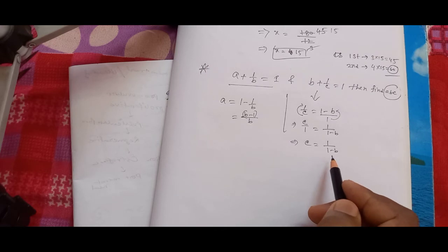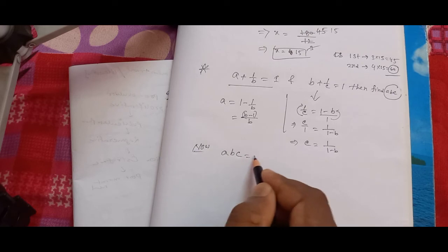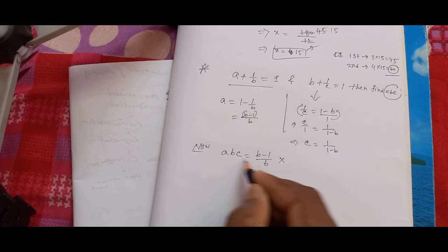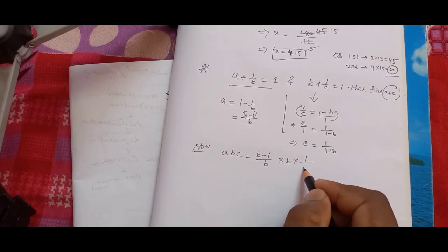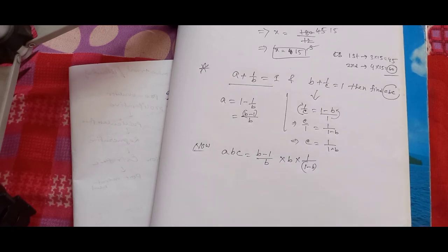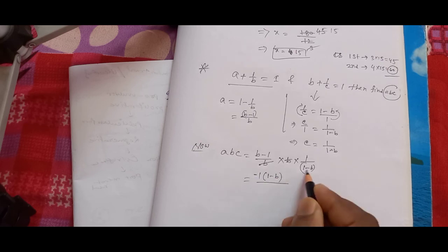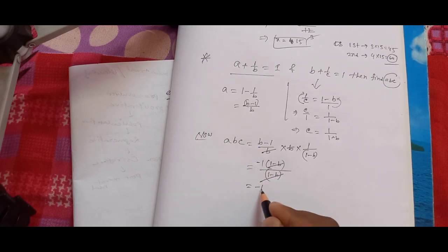Now a b c is equal to (b minus 1) by b, times b, times 1 by (1 minus b). The b's cancel. Taking out minus 1 common from (b minus 1), we get minus (1 minus b) by (1 minus b), and (1 minus b) cancels out. So a b c is equal to minus 1.